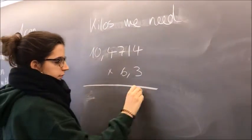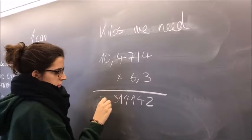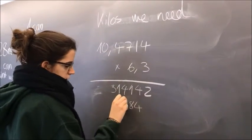Finally, we multiply again the cans we need by the kilos each can weighs, and we get the total.